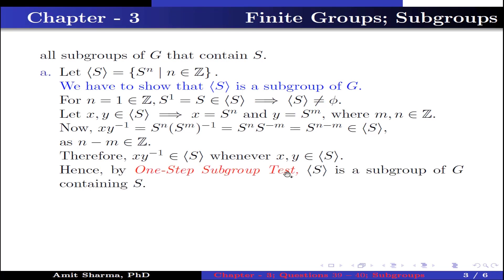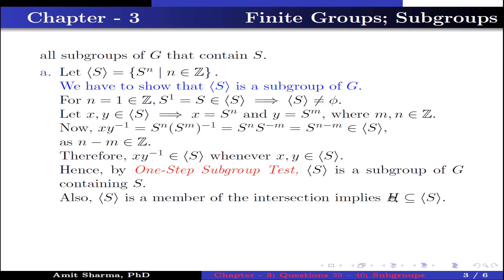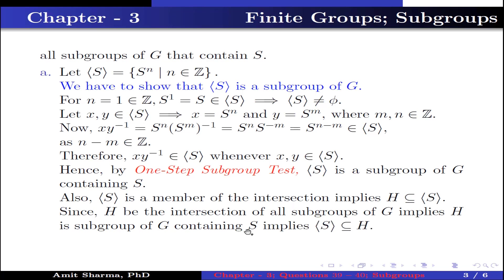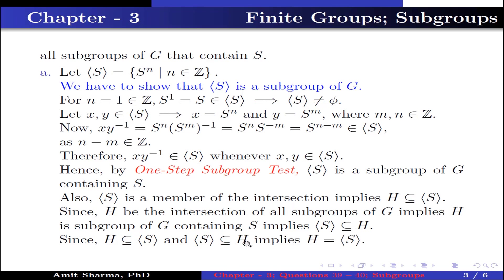Therefore, by the one-step subgroup test, the set generated by S is a subgroup of G containing S. Also, the set generated by S is a member of the intersection, which implies H should be contained in the set generated by S. Since H is the intersection of all subgroups of G, H is a subgroup of G containing S, which implies the set generated by S is contained in H. Since H ⊆ ⟨S⟩ and ⟨S⟩ ⊆ H, this implies H equals the set generated by S.